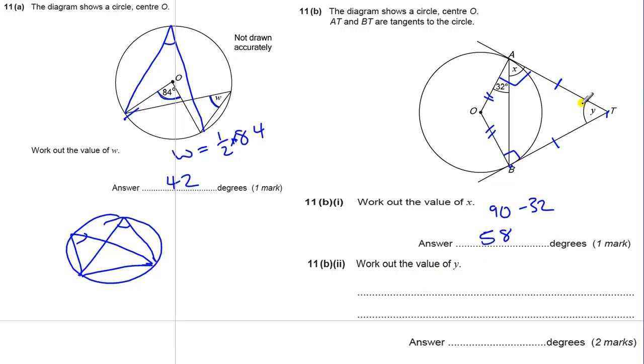Working out the value of y, this angle here. Because lots of things we do here, we could use this isosceles triangle where we just worked out x is 58, this is also 58, so that's 58, this is 58, and we could do 180 and take away two lots of 58. And if we do that on a calculator, we would get 64.